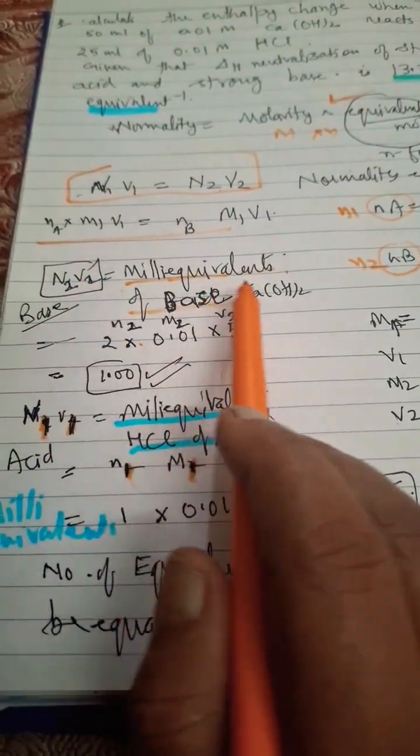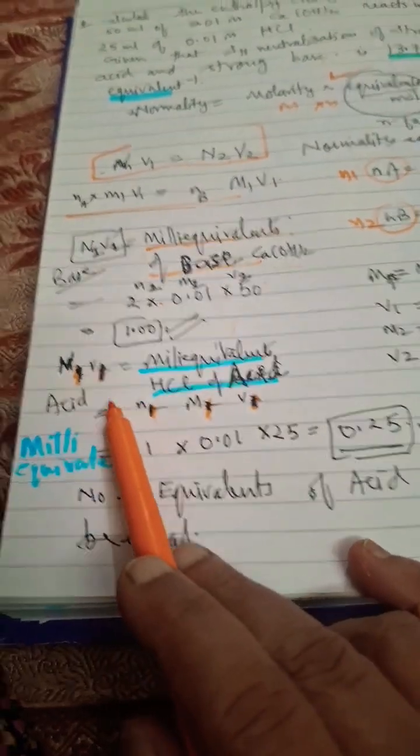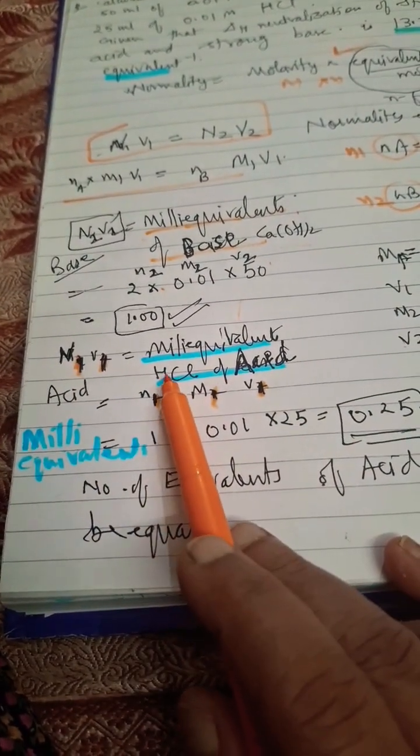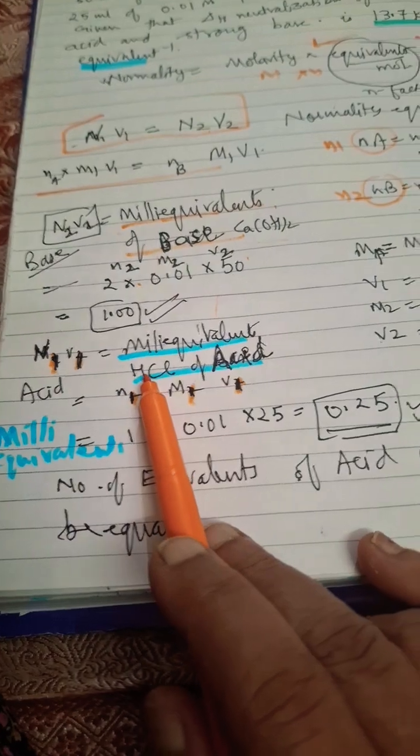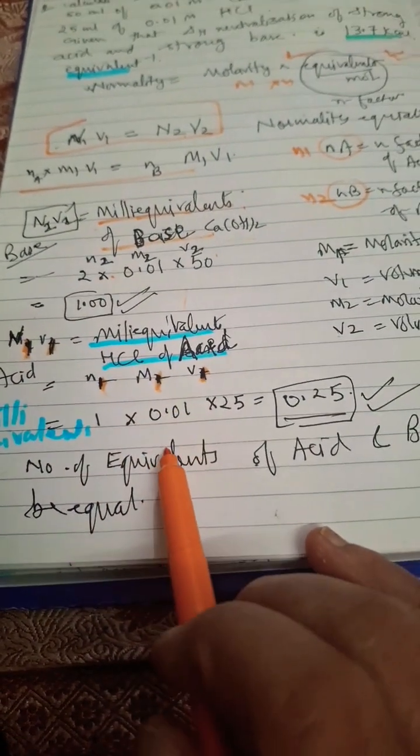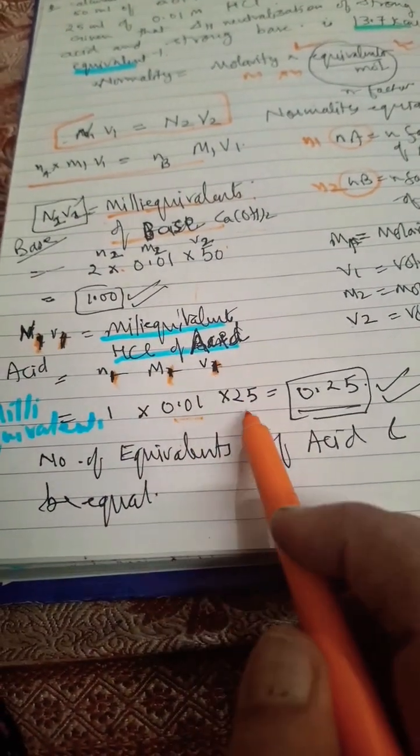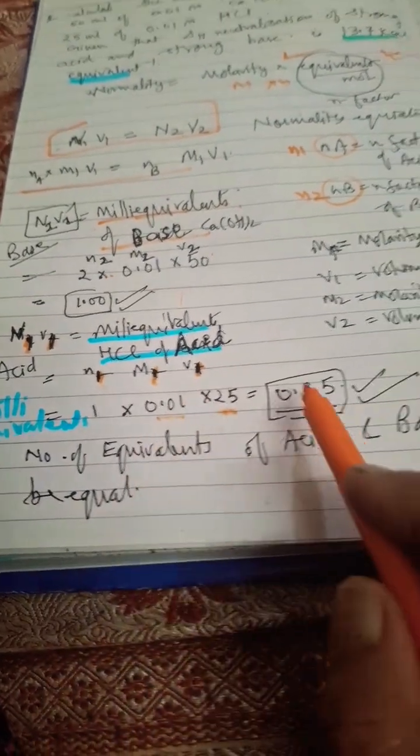Now we will see for acid. N-factor is 1 because only one H+ is released. M1 given here is 0.01, V1 given is 25 ml, so answer will be 0.25 milliequivalents.